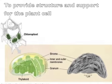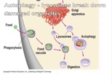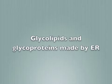In phagocytosis, lysosomes have digestive enzymes inside. Autophagy lysosomes break down damaged organelles. Glycolipids and glycoproteins are made by the ER and modified by the Golgi body.